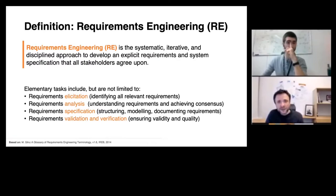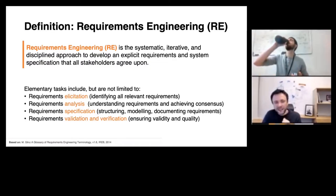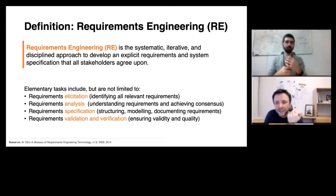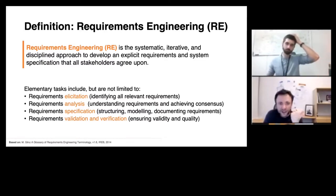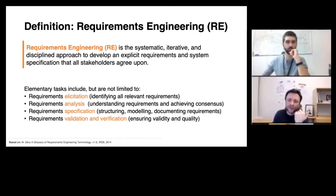Regardless of how you do this, there are actually two common denominators. One of the common denominators are the tasks that you do in requirements engineering. The tasks are always the same. Number one: you have to elicit requirements — identify requirement sources, identify the relevant requirements in a project. Number two: you have to analyze them, understand the requirements, and achieve consensus on the requirements. Typically, to analyze requirements, you use modeling techniques, prototyping techniques, things like this.